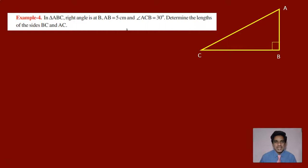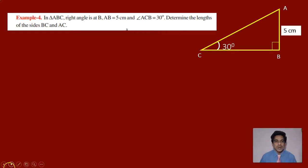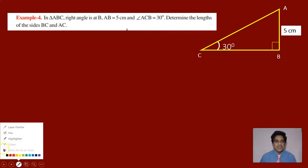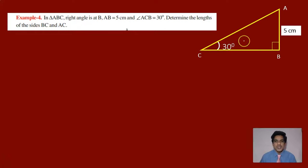We are given AB is equal to 5 cm and angle ACB, which is angle C. So we are given two values: the angle at C and the opposite side of angle C. We have to find the length of BC and the length of AC — that is, the adjacent side and the hypotenuse.